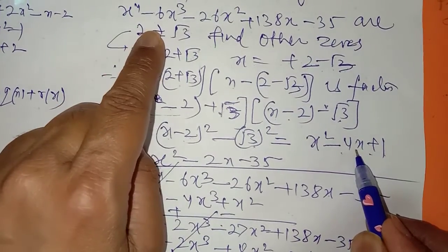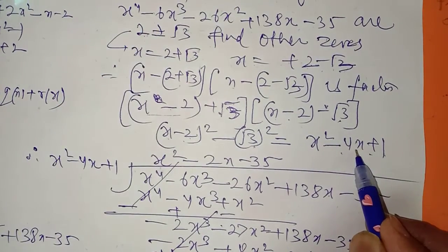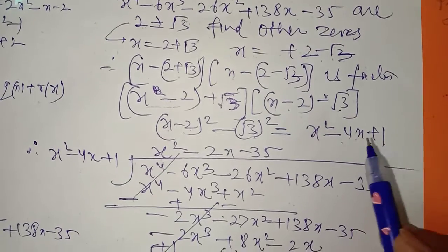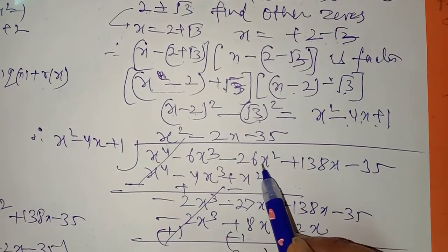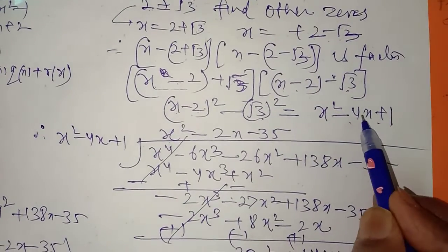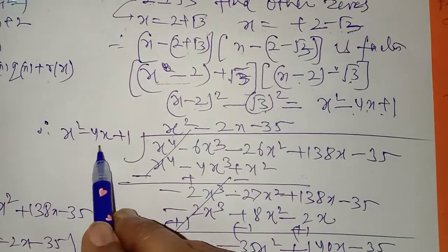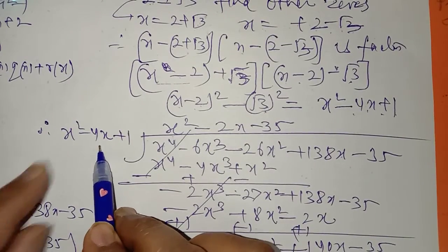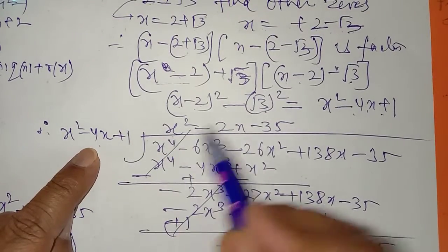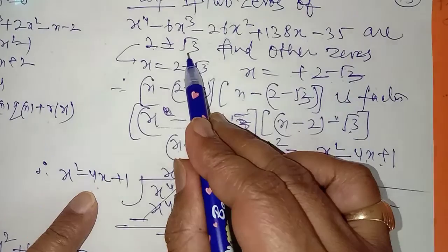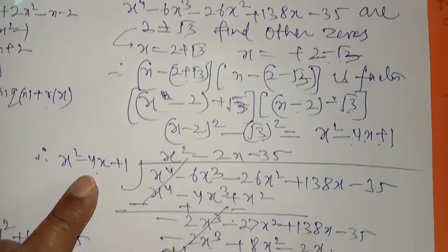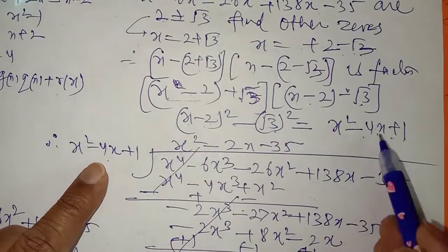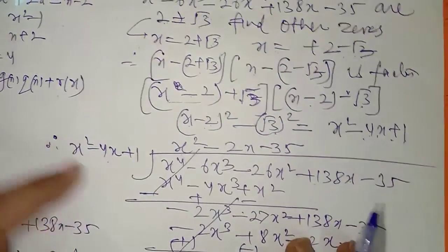تو اس کے 2 zeros یہ ہیں، اگر آپ solve کریں گے۔ اب کیونکہ یہ polynomial کے two zeros ہیں اور power 4 ہے — 2 zeros آپ کو دے رکھے تھے، جیسے میں نے question number 3 میں بتایا تھا — you have to find the remaining 2 zeros۔ تو آپ اس polynomial کو اس divisor سے divide کریں۔